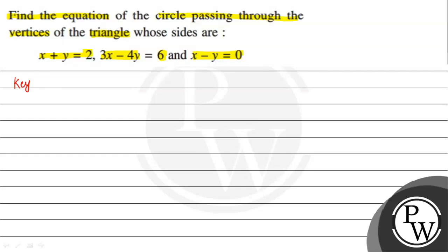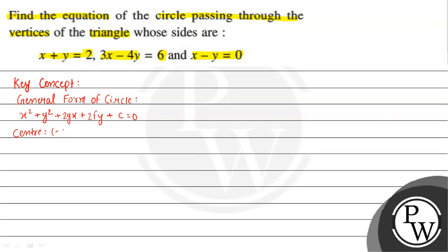The key concept to solve this question is that we should know the general form of circle, which is given by x squared plus y squared plus 2gx plus 2fy plus c equal to 0, where the center is (minus g, minus f) and the radius is given by square root of g squared plus f squared minus c. We will use this concept here to solve the given question.